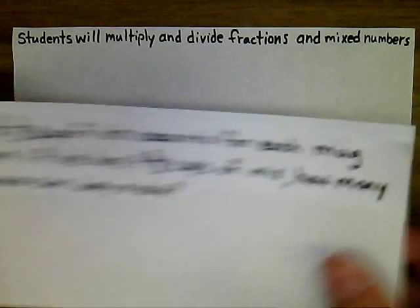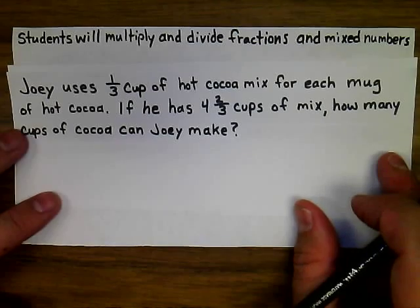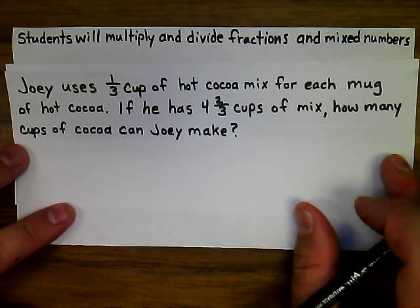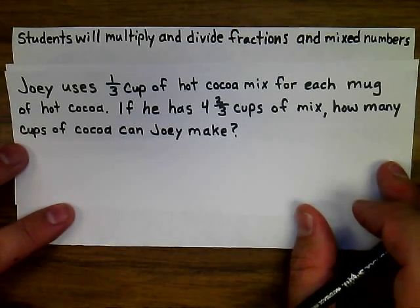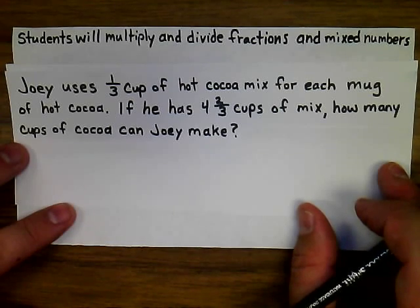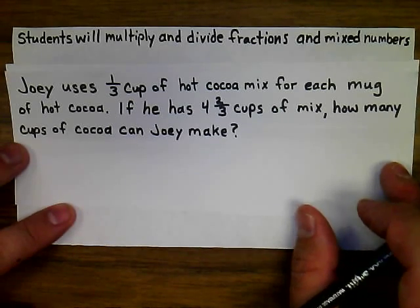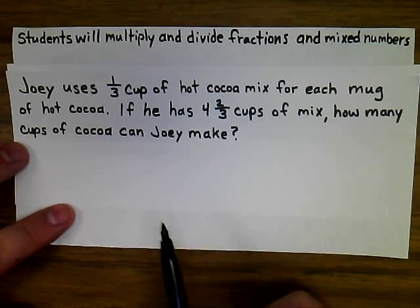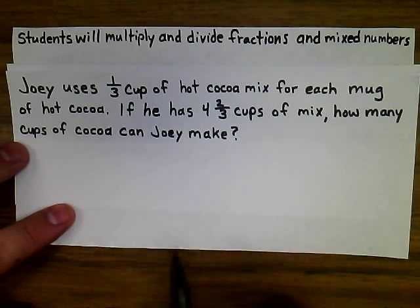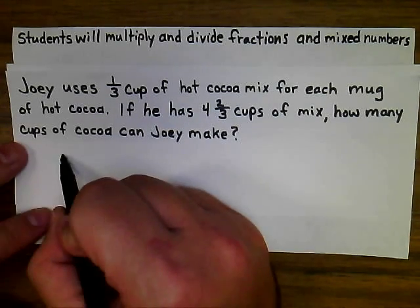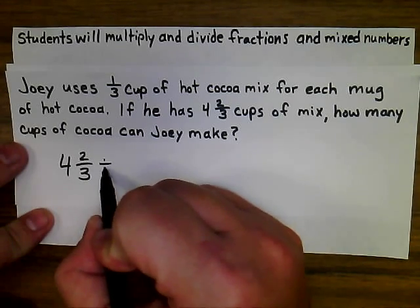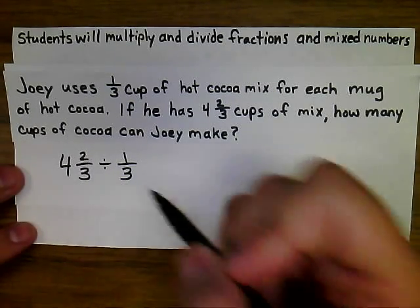Another example: Joey uses one-third of a cup of hot cocoa mix for each mug of hot cocoa. If he has four and two-thirds cups of mix, how many cups of cocoa can Joey make? We're taking a large amount and breaking it into smaller portions of one-third, so what we're solving is four and two-thirds divided by one-third.